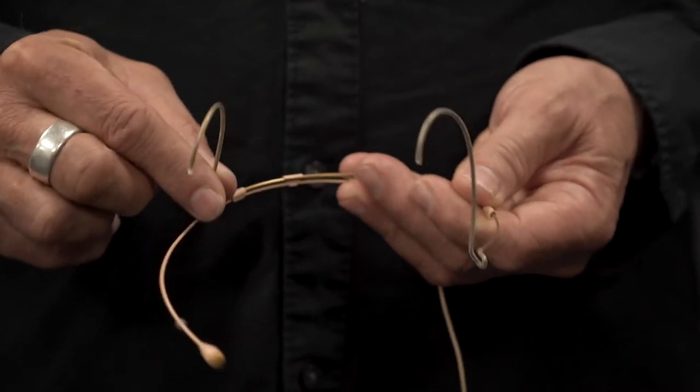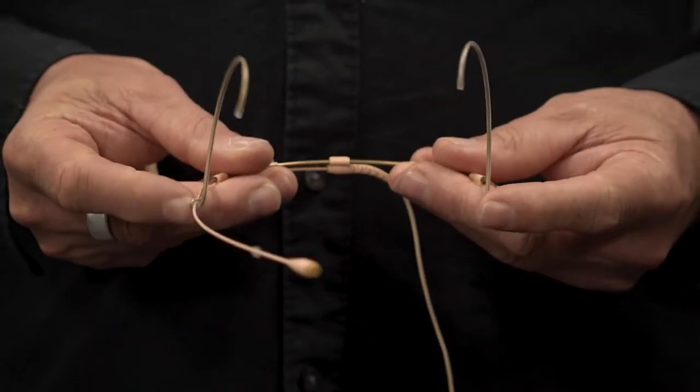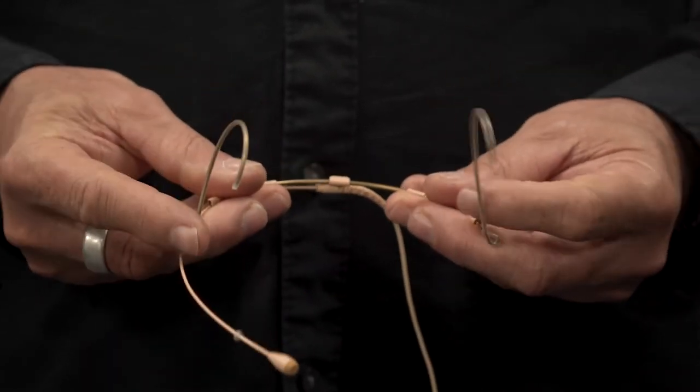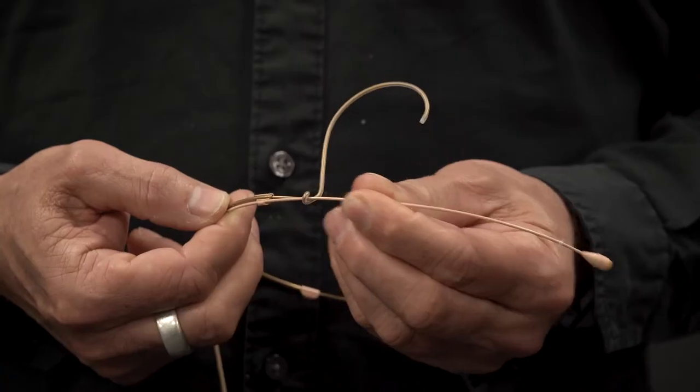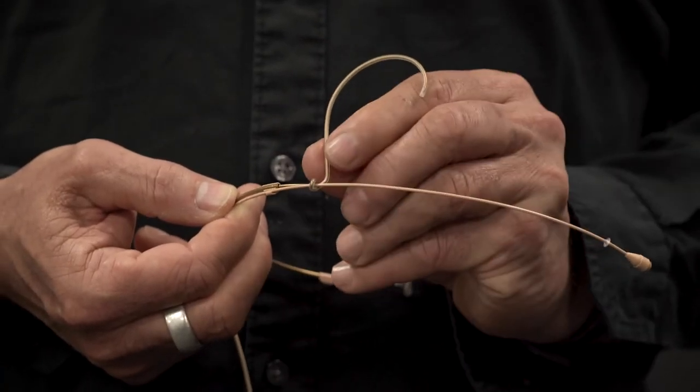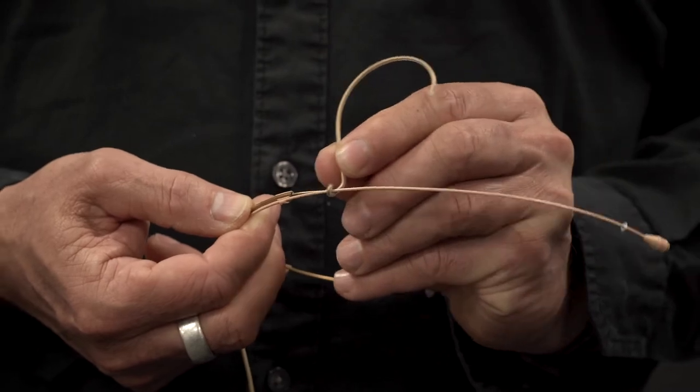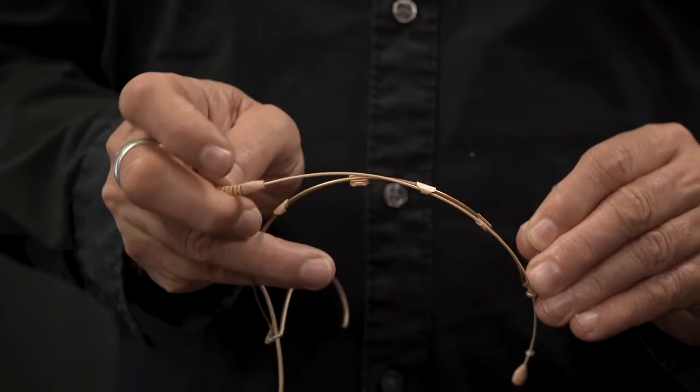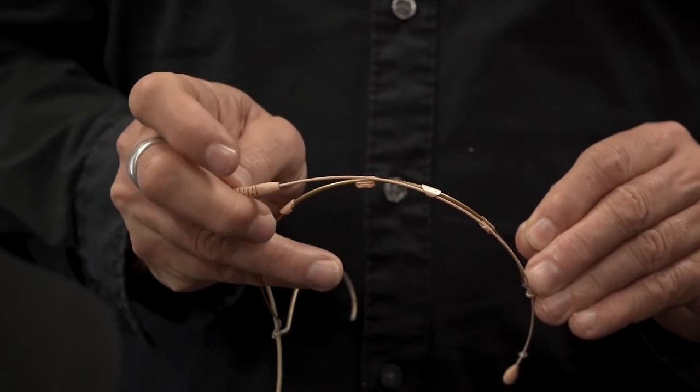The ear hooks can be moved in and out individually to make sure you have the right headband size. When you have the correct length of the boom and the right position on the ear hook, you fasten the boom on the hooks here.